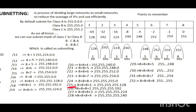Slash 25 is 8 plus 8 plus 8 plus 1. First three octets are 255 each, and the fourth octet has 1 bit giving 128. So the subnet mask value of slash 25 is 255.255.255.128. Slash 26 is 24 plus 2. The fourth octet has 2 bits giving 192. So slash 26 is 255.255.255.192.